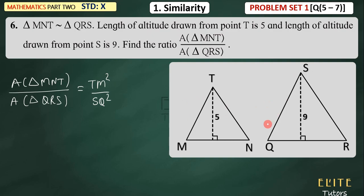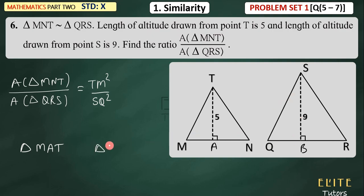We need to find TM and SQ. How? This triangle is similar to this triangle. We introduce auxiliary points: let the altitude from T meet MN at point A, giving altitude TA, and let the altitude from S meet QR at point B, giving altitude SB. We need to prove that triangle MAT is similar to triangle QBS. Why? Because if these two smaller triangles are similar, we can know the ratio of their sides.